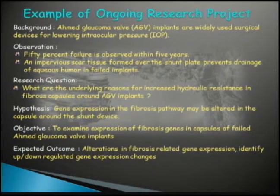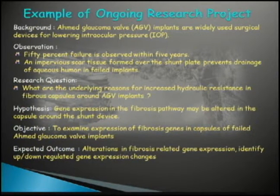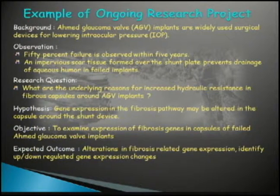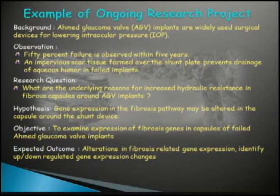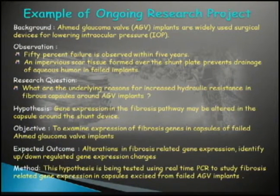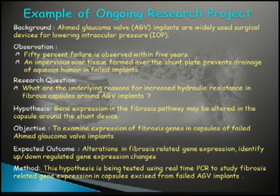It's important when you've done this workup to also know where you want to go and what kind of outcome you're looking for. In this case, we're looking for alterations in fibrosis-related genes — identifying genes that are upregulated and downregulated. You then choose the method you're going to use; in this case, we could use real-time PCR to study the fibrosis genes.